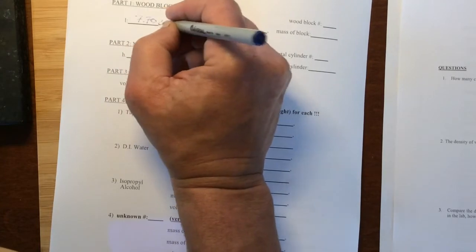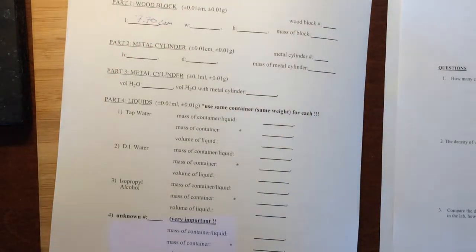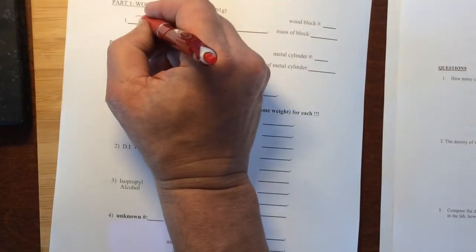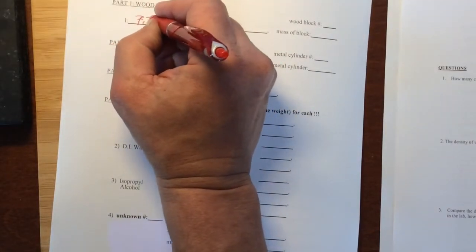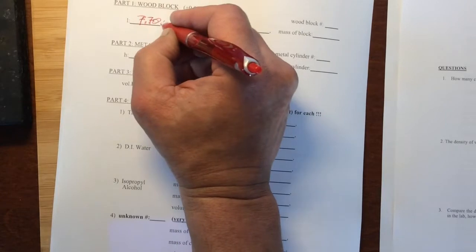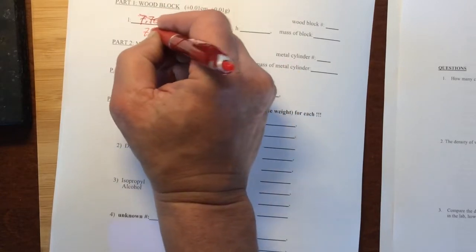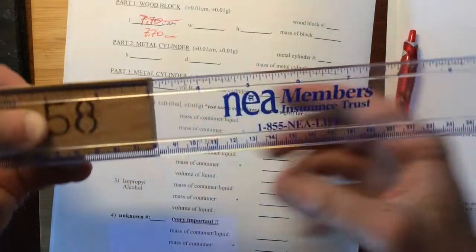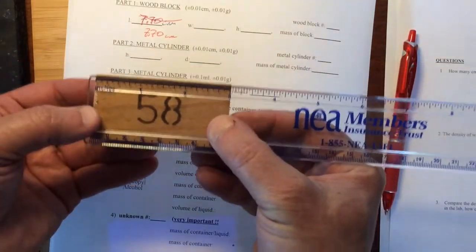We should include units. I need a better pen. I'll use my magic teacher pen. 7.70 centimeters. So that's what I will call the length.